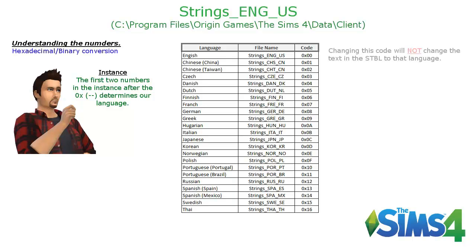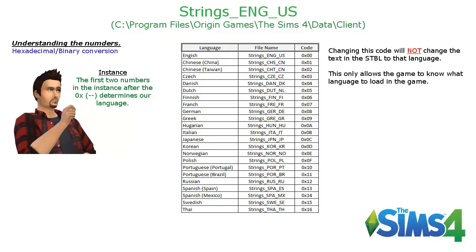So if I type out my text string in English and then put 07 — the French code — in the beginning of that text string, it's not going to change the text to French; the text will still remain English. What it does is allow somebody from France who downloaded the French game to open it up and see English instead of error messages. You'll see a lot of modders put every language text file into their package — it's just a duplicate of the same text file but with different codes in front.